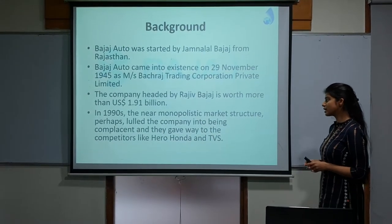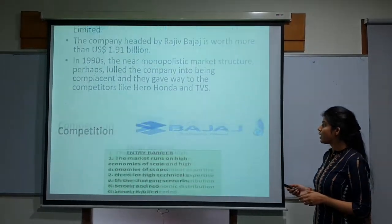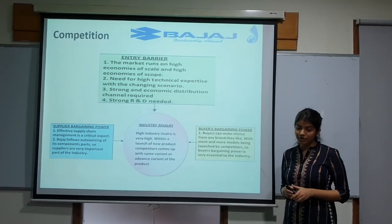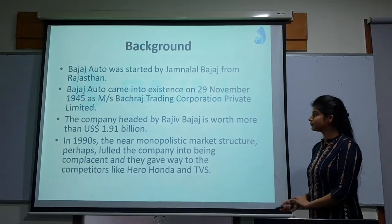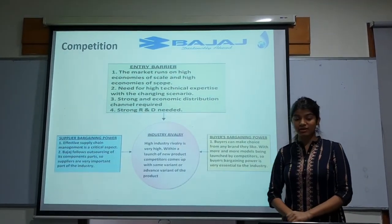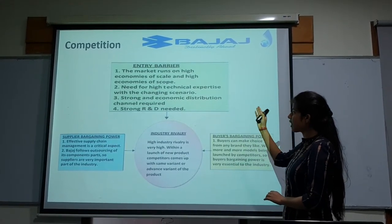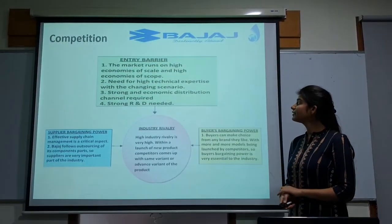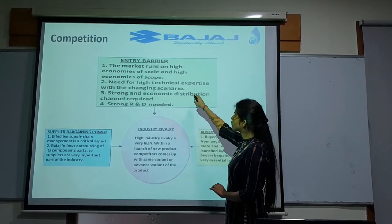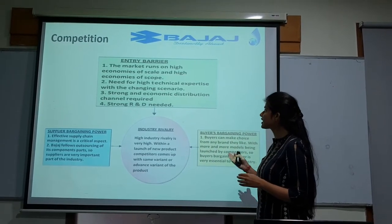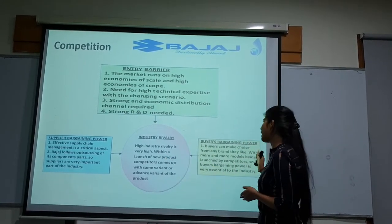Earlier the market was monopolistic but after the liberalisation in the 90s there were many competitors in the market. The competition has increased and the industry rivalry is very high because of the entry barriers. The market runs on high economies of scale and high economies of scope, which affects industry rivalry, and industry rivalry directly affects the supply bargaining power and buyer bargaining power.